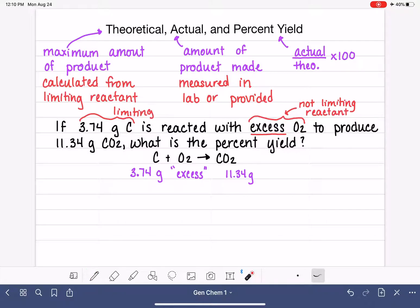And then let's talk about the 11.34 grams of CO2. This quantity of CO2, this is the actual yield. Remember, the actual yield is a number that either you measure yourself in the lab, or it is provided to you in the problem if you're doing something on paper. So 11.34 grams is our actual yield.